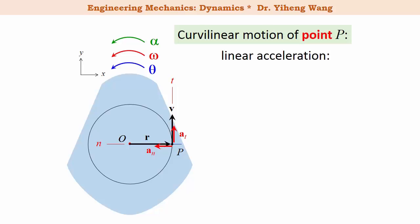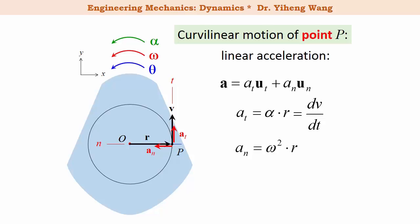This agrees with what we've learned about curvilinear motion: linear acceleration has two components, one along the tangential direction and the other along the normal direction. In scalar format, tangential acceleration a_t equals alpha times r, and normal acceleration a_n equals omega squared times r, which also equals v squared over r as learned before.